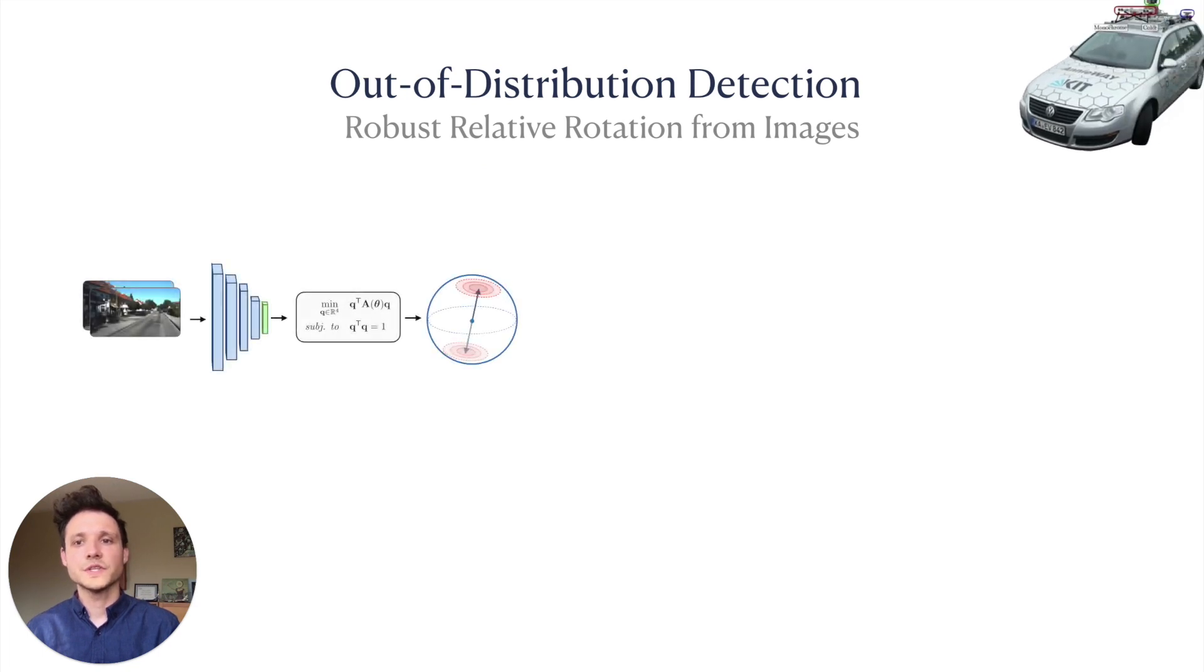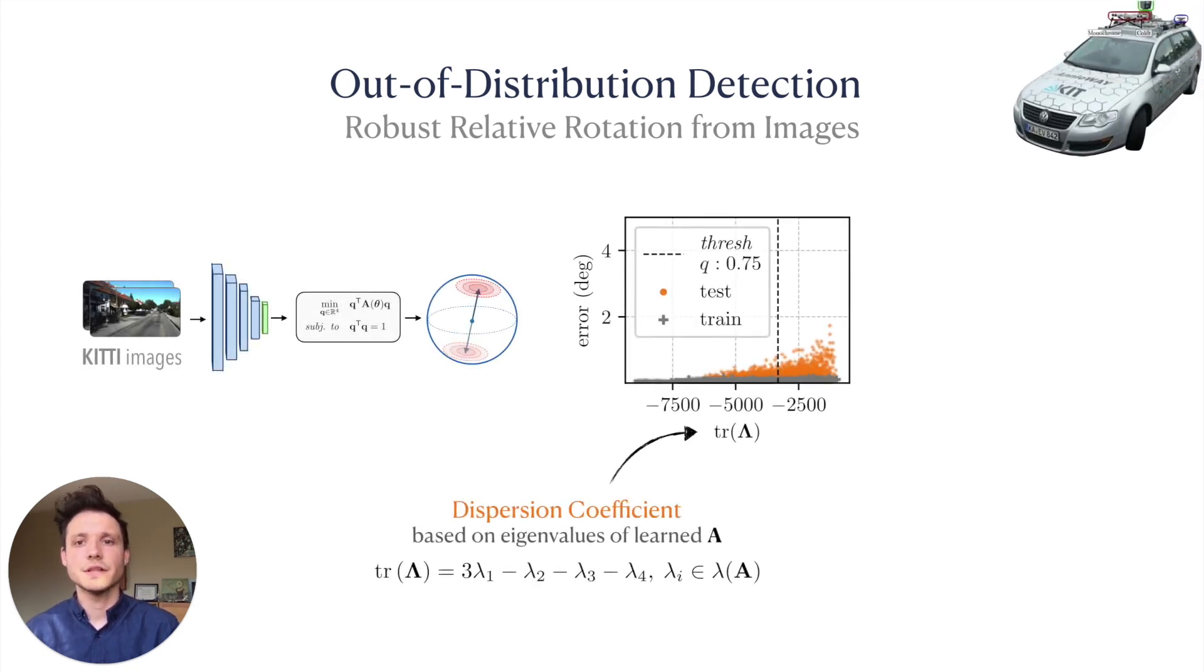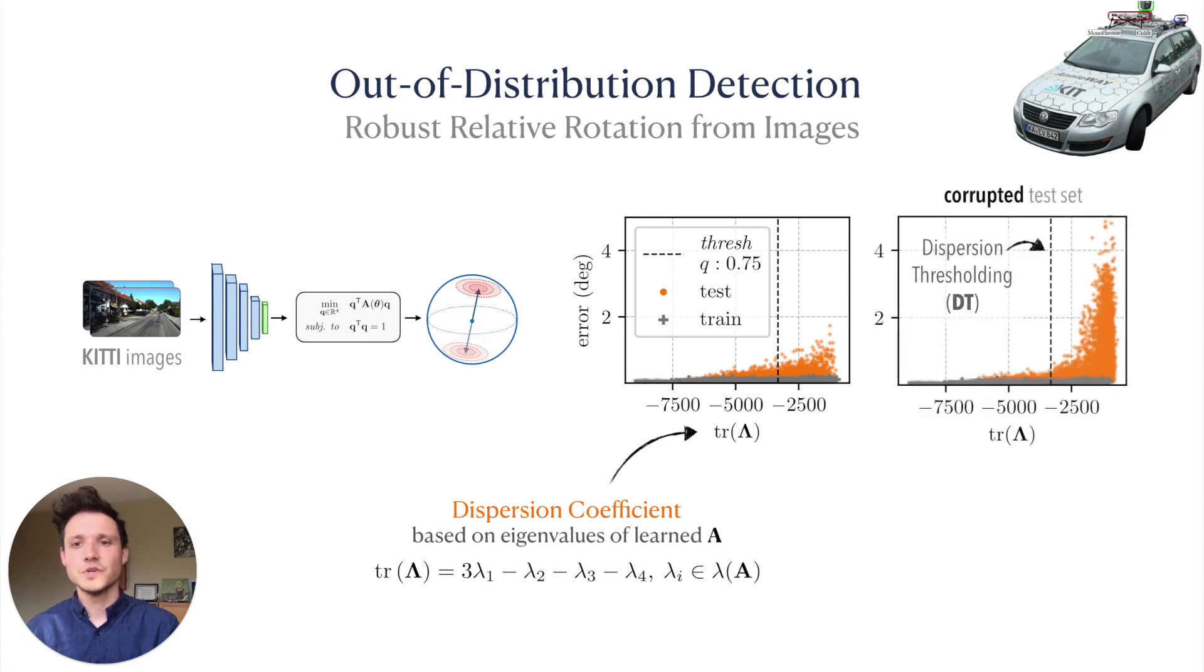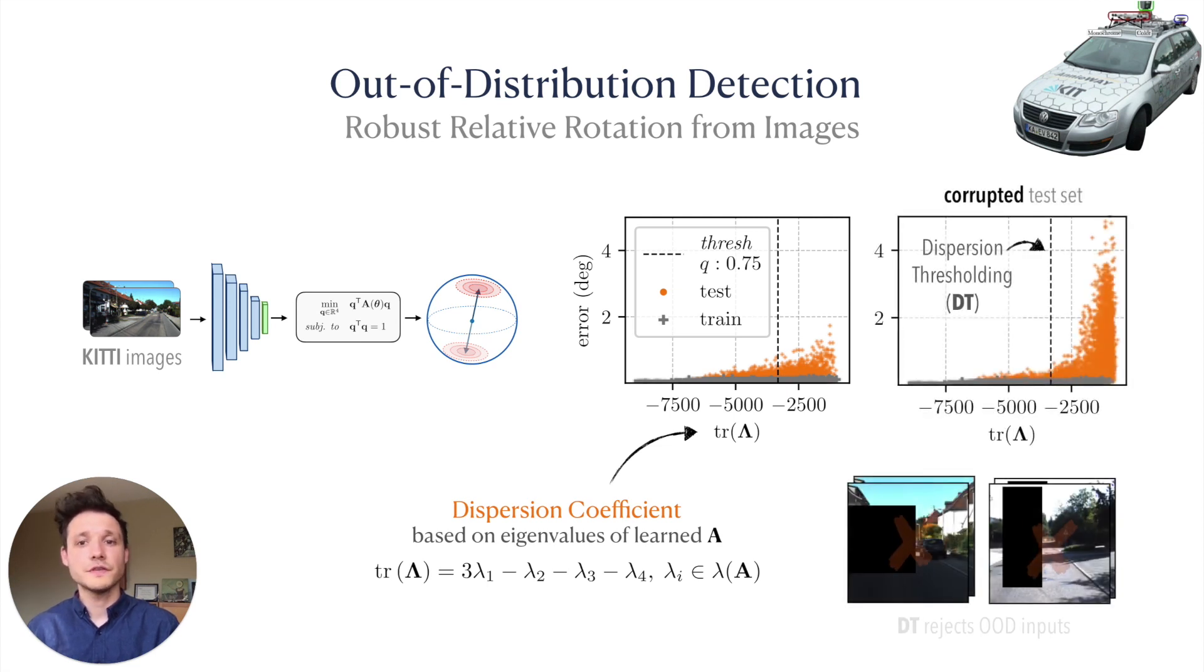Further, we demonstrate through experiments on KITTI data that we can threshold a dispersion coefficient based on the eigenvalue gaps of our learned matrix A to detect and reject out-of-training distribution samples at test time. We show the power of this approach by artificially corrupting test images with dark rectangular regions.